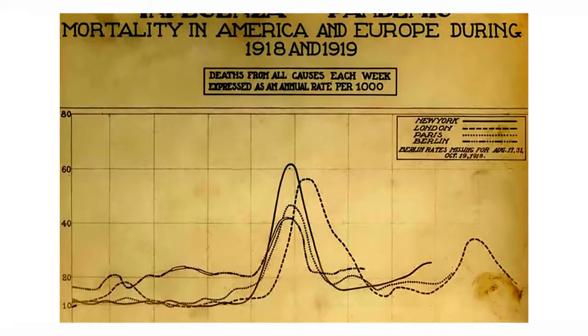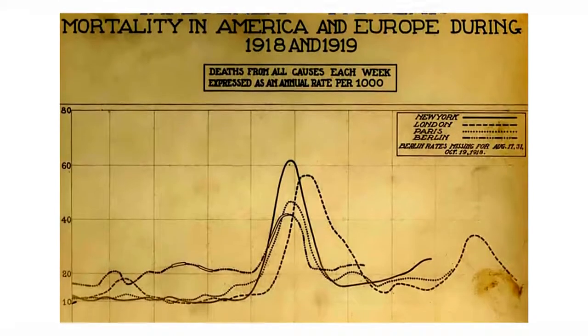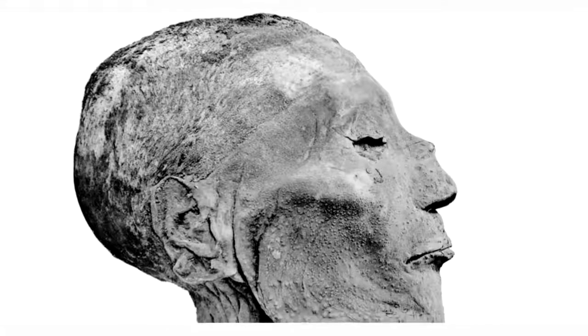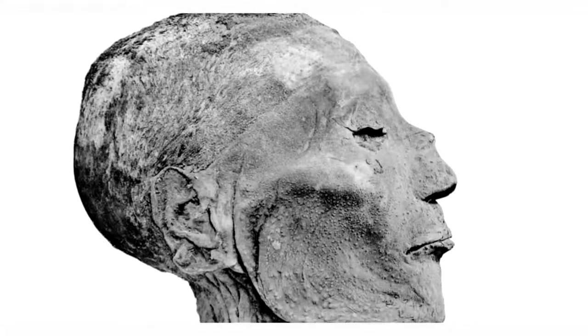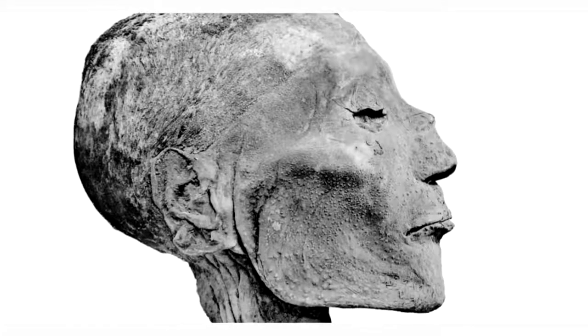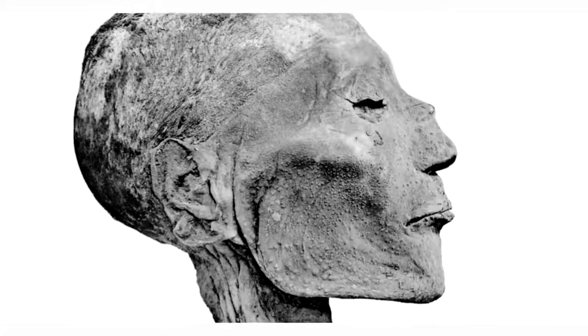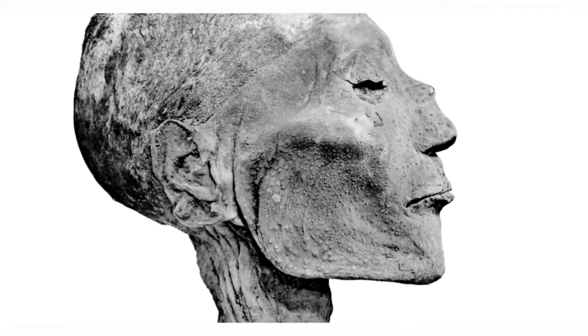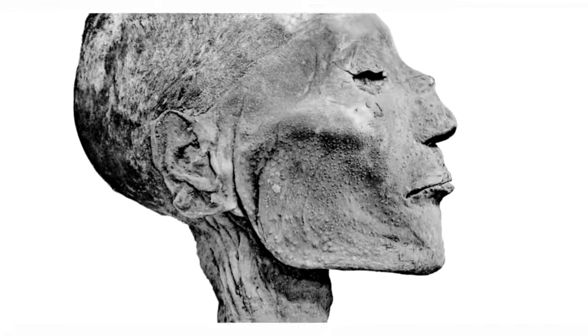These infectious diseases can be noted in history where they left their mark. For example, in this mummy — Ramses V, dated about 1157 BC — we can see evidence of smallpox lesions.